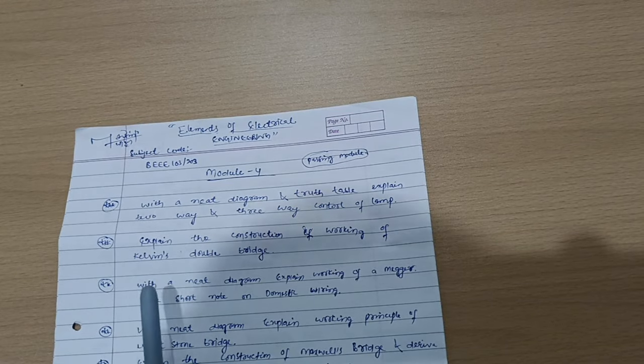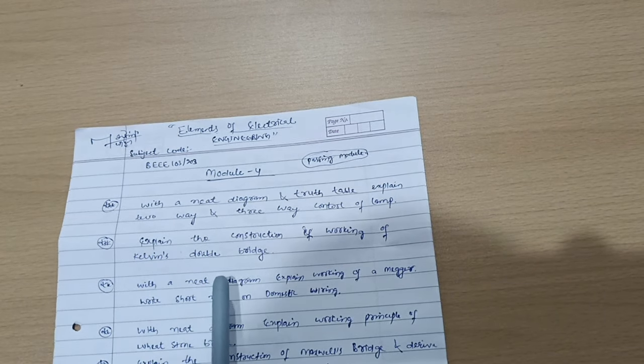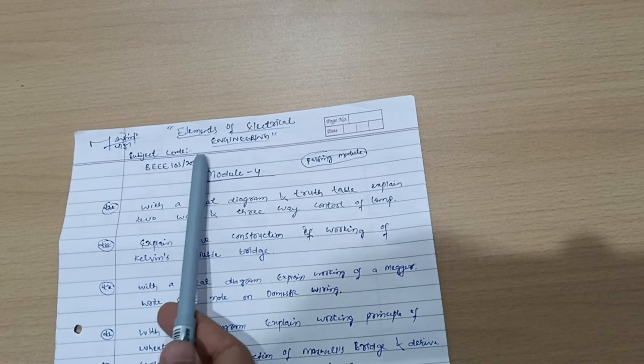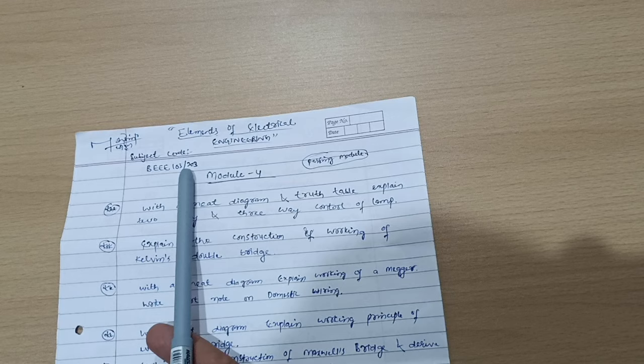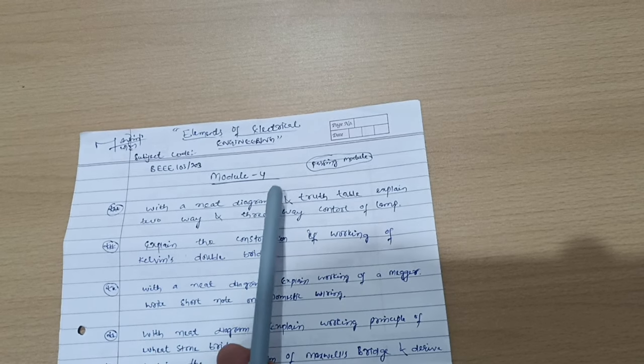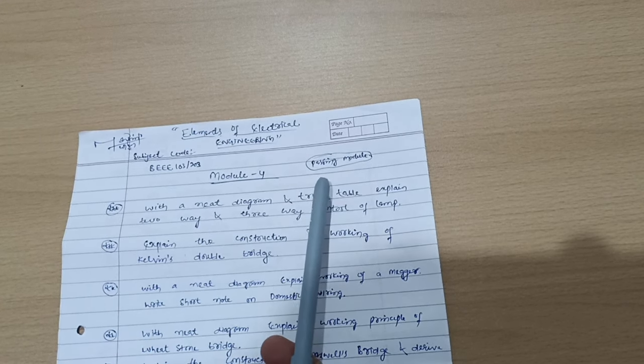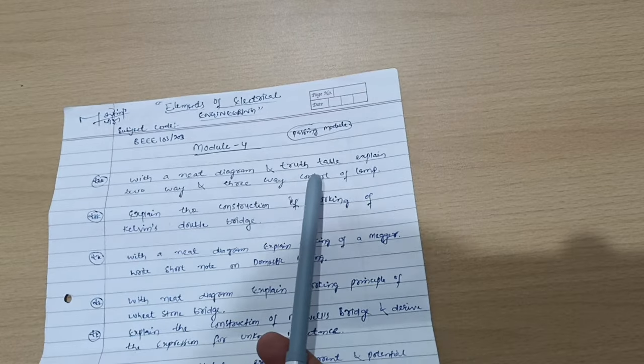Hey students, welcome back to my another video. I will discuss here the most important questions of Elements of Electrical Engineering. Subject code is BEEE103 or 203. I will discuss first the passing modules, then after I will take the rest of the two modules.